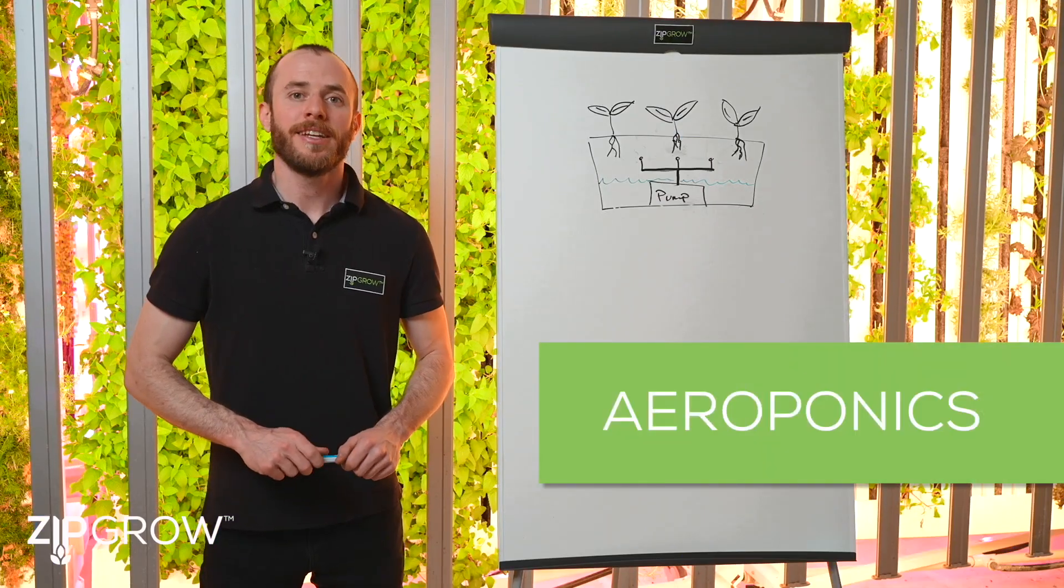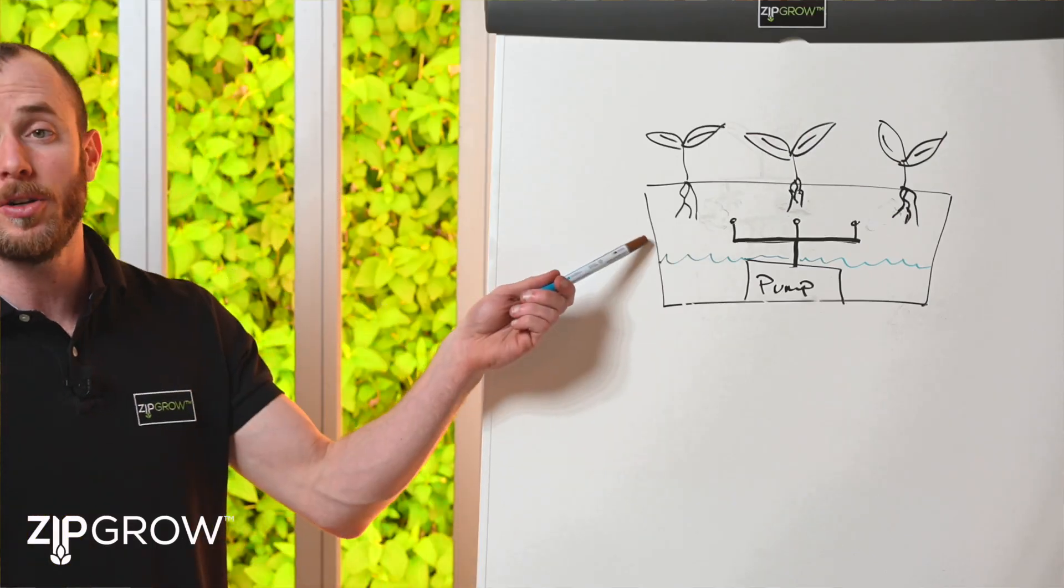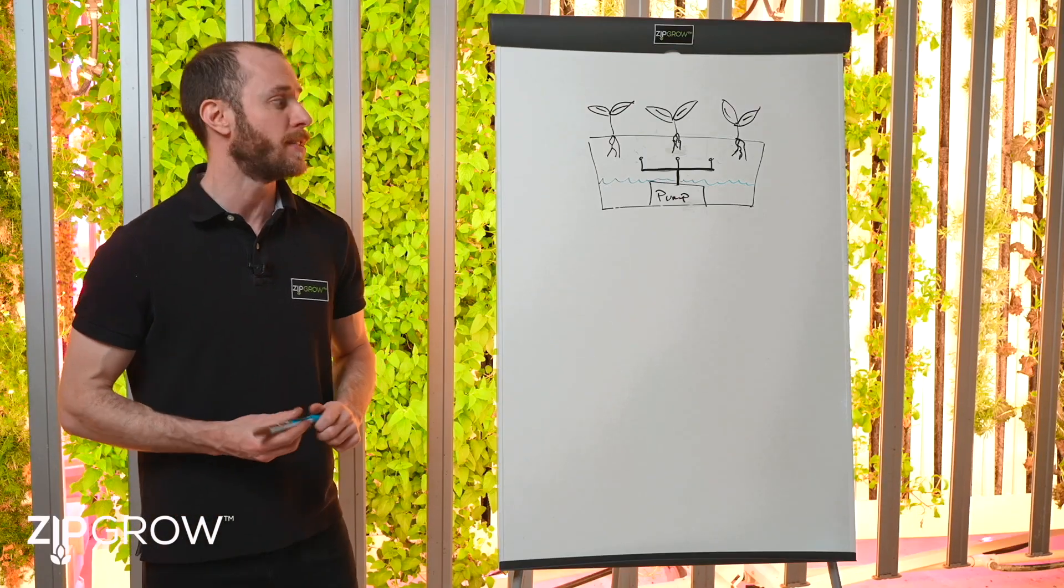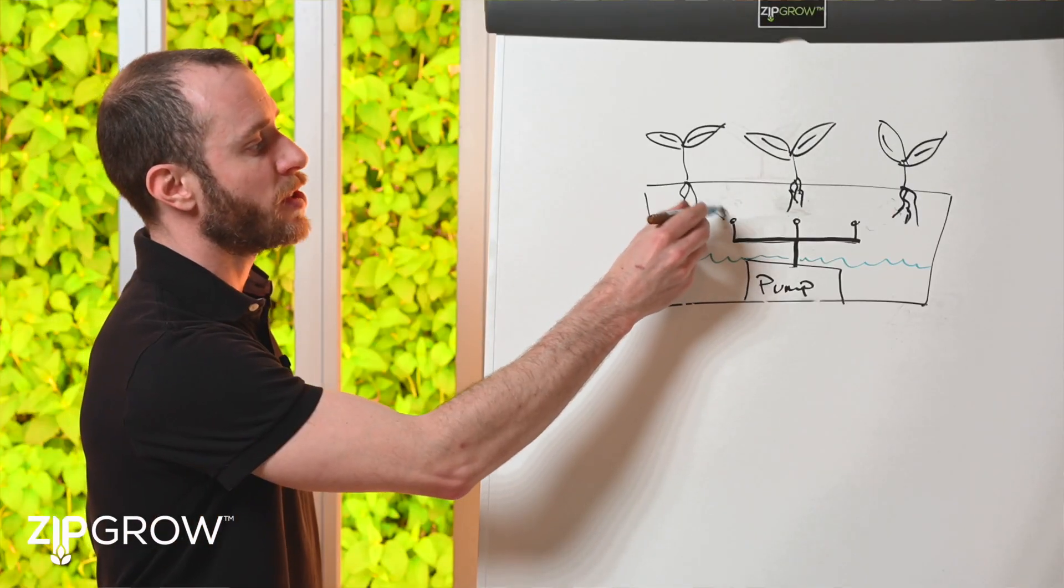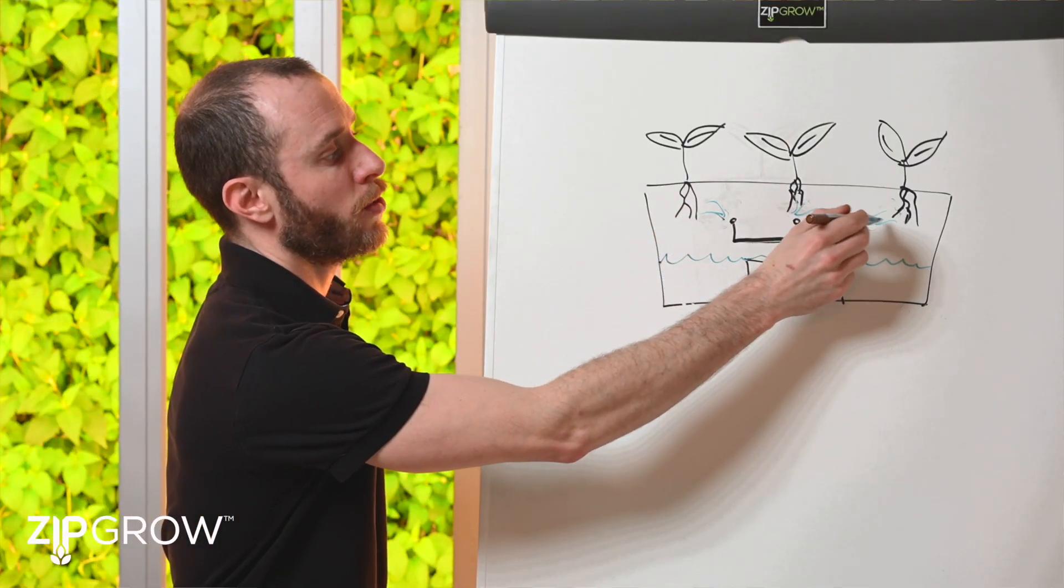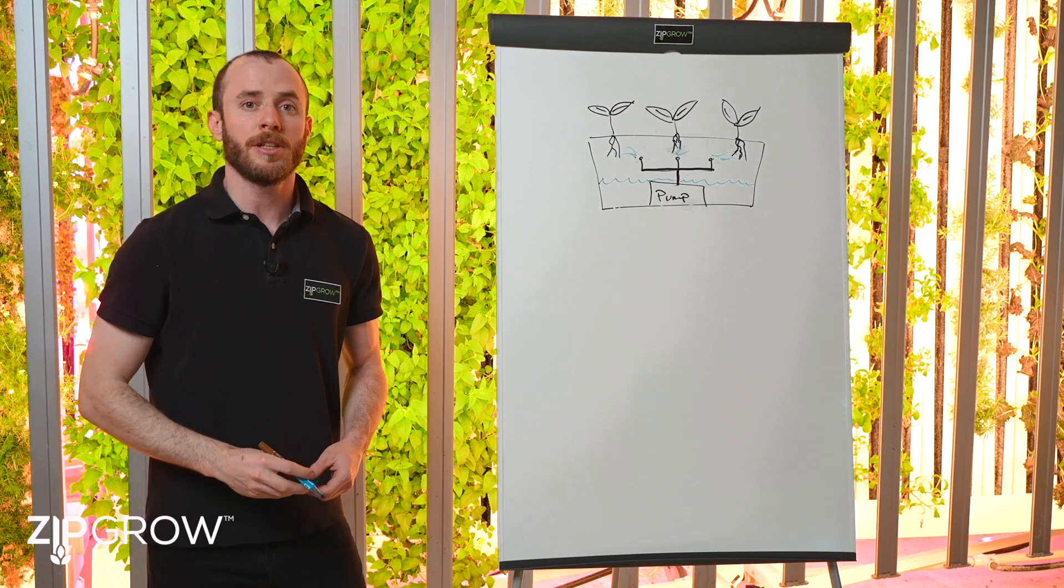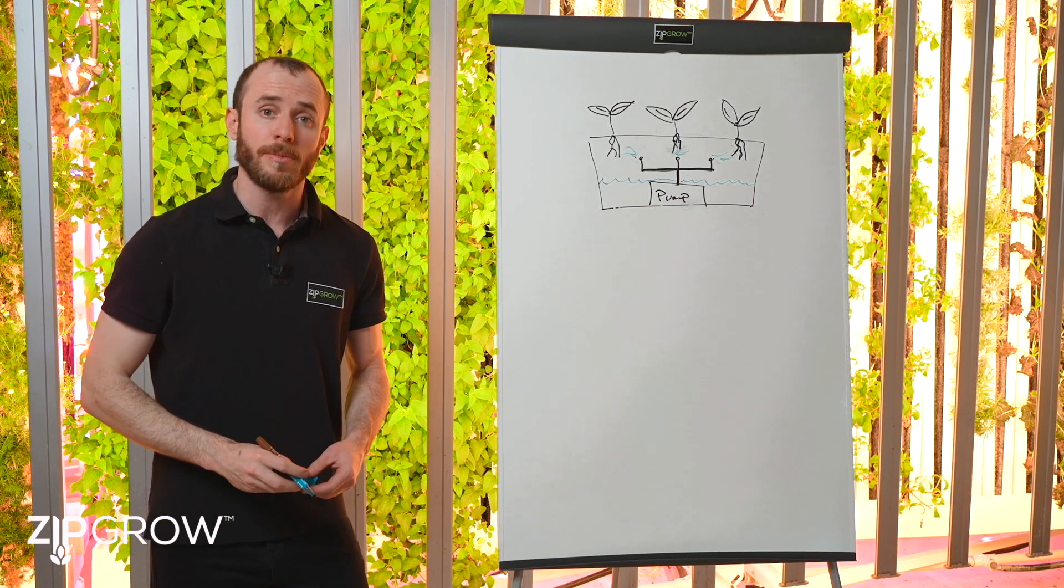A more advanced technique is known as aeroponics. Instead of having the roots suspended in a nutrient solution, they're suspended in the air instead. The system uses a sprayer to coat the roots in a very fine mist. This increased aeration delivers more oxygen to the roots, further stimulating growth.